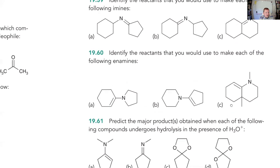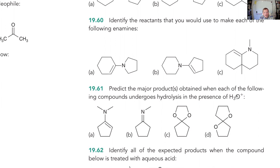Question 61 — I want you to see that this is really the exact same question as above. For 59 and 60, it said what were the reactants you would use to make the following imines or enamines? And 61 says what is the major product if it goes through hydrolysis? Hydrolysis just means you're undoing the formation of these enamines, imines, or acetals. The answers are going to be the same because what you start with to make the imine is exactly what you get when you hydrolyze the imine.